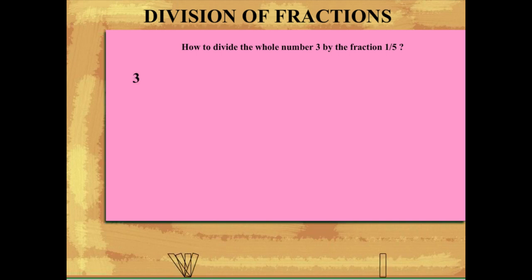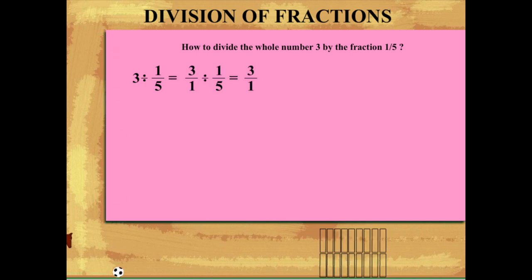Simple. 3 can be written as 3 upon 1, which is now divided by 1 upon 5. This is equal to 3 by 1 into 5 by 1,